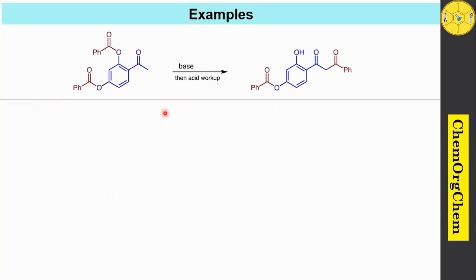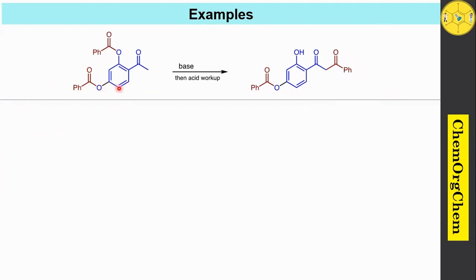Consider this first example. When you take this compound and use base followed by acid workup, it readily produces this corresponding β-dicarbonyl compound. You should note that only the ortho position having the acyl group is rearranged to produce this compound; however, the para position having the acyl group did not involve this rearrangement reaction.